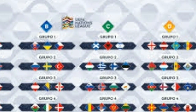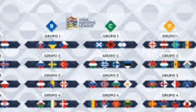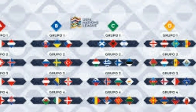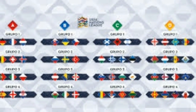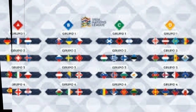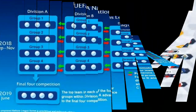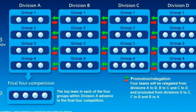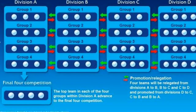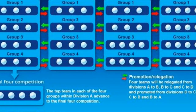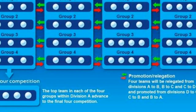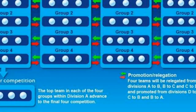For the first season, 2018-2019, all countries are divided into four different leagues — A, B, C, and D. Each league is divided into four groups, with each group filled with three to four countries.